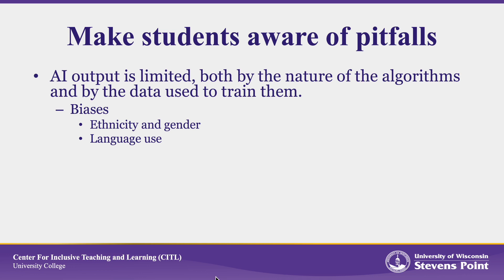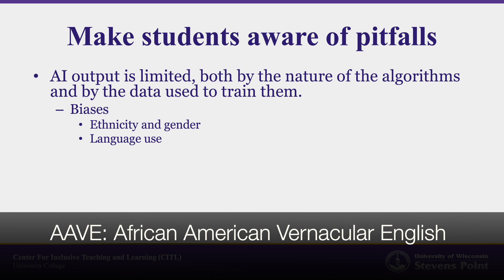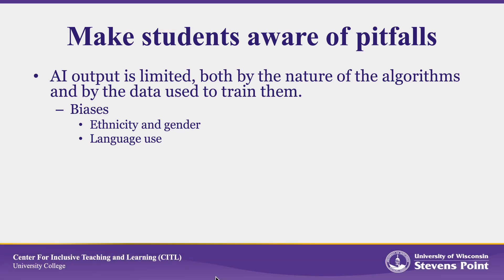Biases built into the algorithms are rampant. Both text generation and image generators disproportionately assume white and masculine, leaving women and people of color underrepresented in output. There are also strong biases in language use — dialects are a mystery to it. For example, you're unlikely to get output written in AAVE unless you specify that you want that, and even then, the AAVE constructs you get may be flawed.